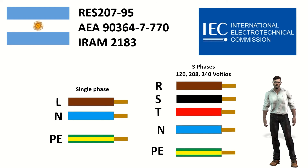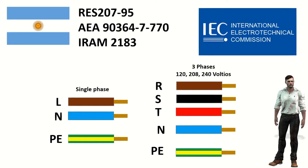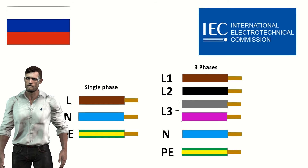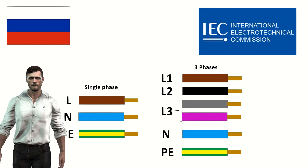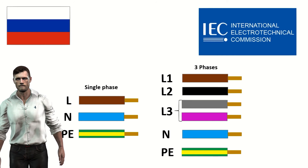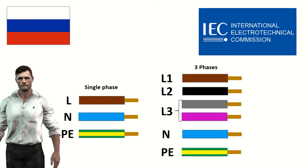Argentina has also adopted its color code using the IEC standard as a reference, although unlike Europe, it has chosen red for phase L3. Russia used the same color code as China for cable colors, but now its standard also takes the IEC standard as a reference. In this case, for phase L3, the use of gray or purple is recommended.